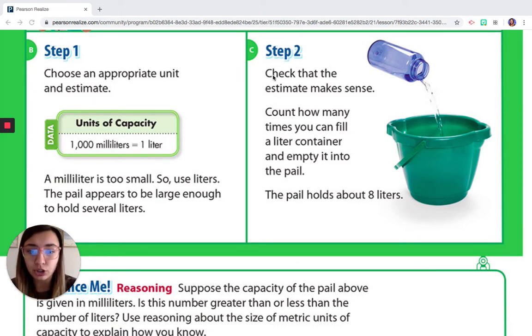So the second step we're going to do is check that the estimate makes sense. So like we said before, are we going to take 1000 droppers of water to try to fill up that pail? Or are we going to take just a couple full water bottles to fill it up? To me, it makes way more sense to take a couple of liter water bottles to fill it up.